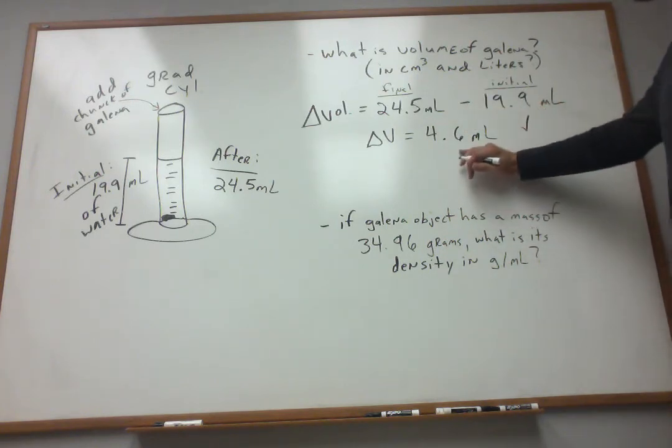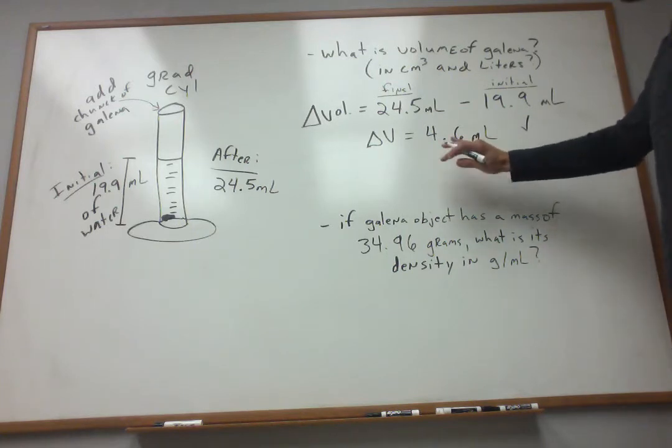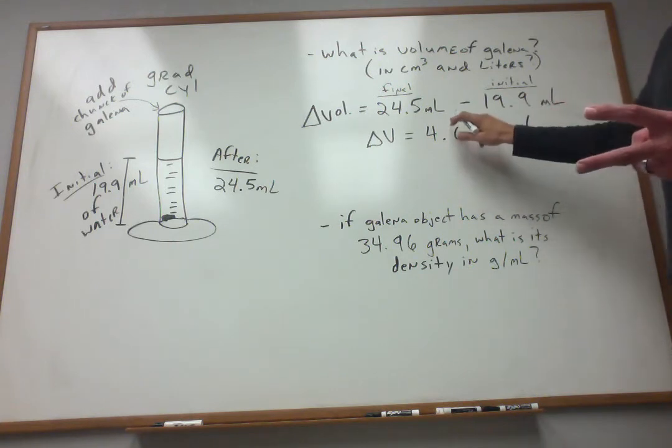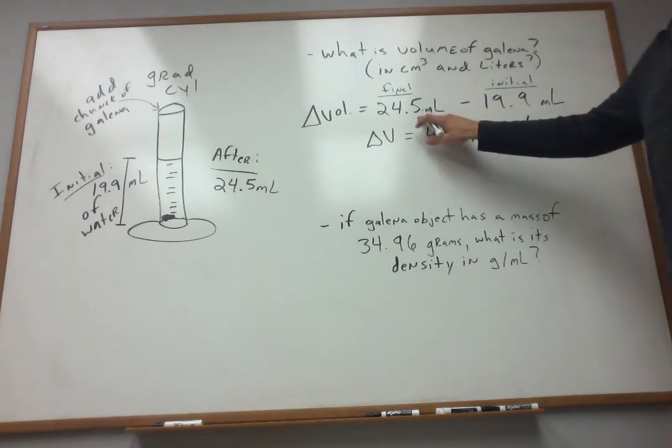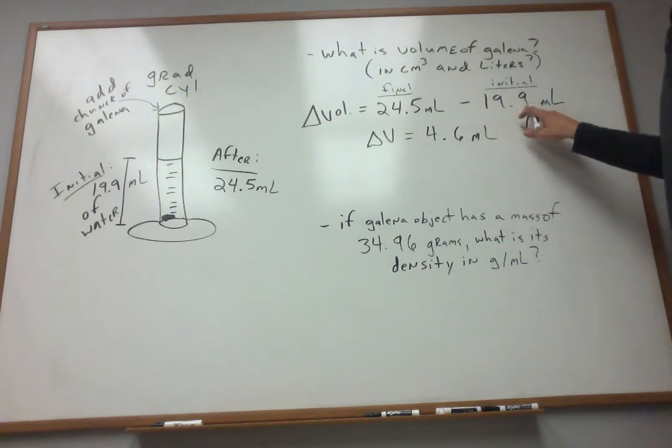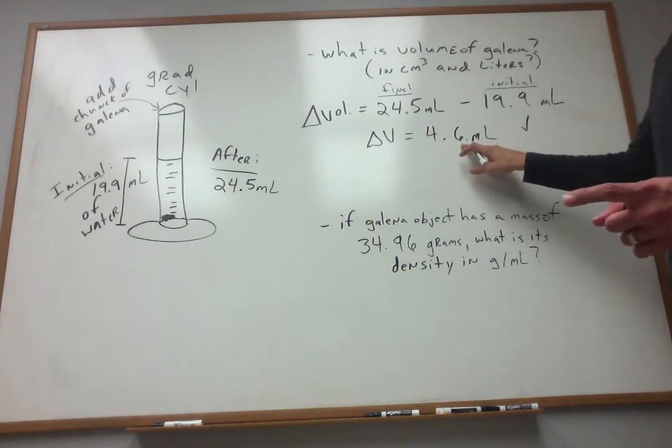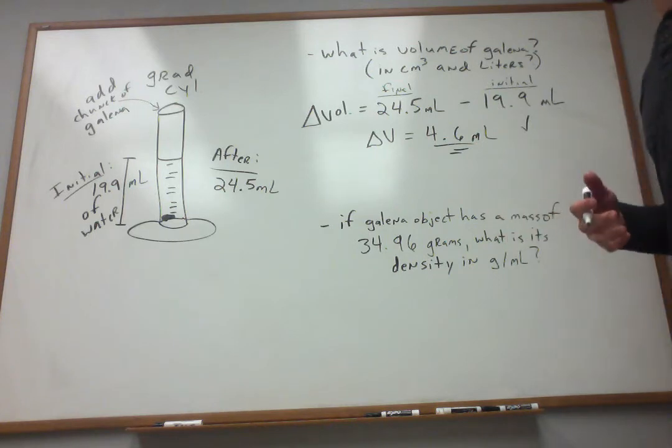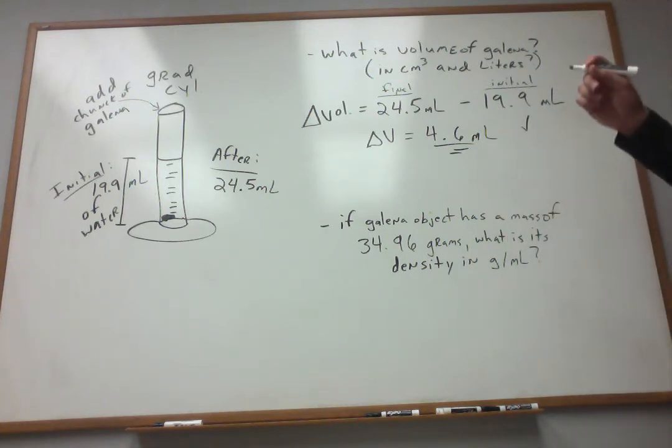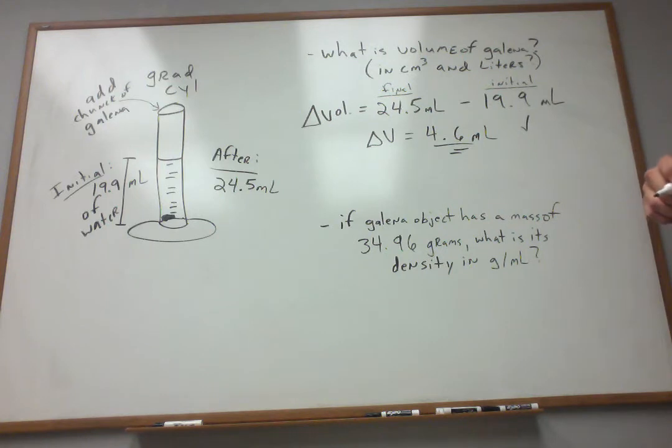Notice here, in terms of sig figs, this has three, this has three. My answer only has two. Because what's important when you're subtracting or adding numbers is how many decimal sig fig places you've got. Here I've only got one sig fig to the right of the decimal point. Here I've got one, so my answer should only have one. That's the rule for addition or subtraction. So this would be a perfectly acceptable answer in terms of sig figs. So 4.6 milliliters is the volume of that chunk of irregularly shaped galena as measured through water displacement.